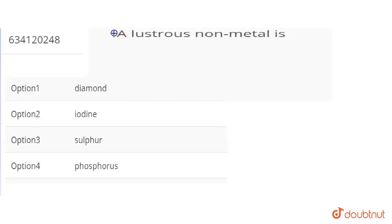Hello everyone, I have a question saying that a lustrous non-metal is among the following compounds, which means lustrous non-metal is going to be found. First of all,